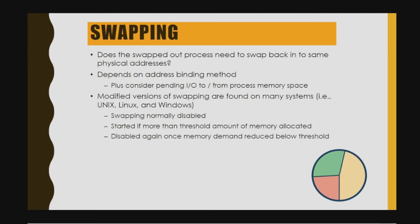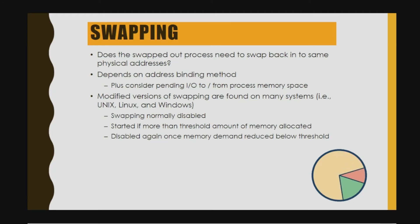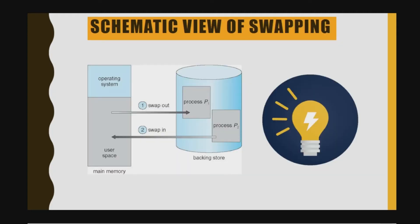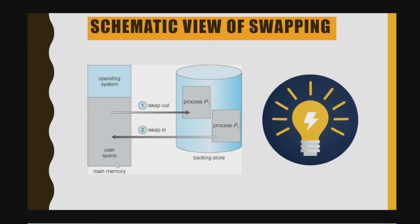In operating systems like Unix, Linux, and Windows, a modified version of swapping is used. In this modified version, swapping is normally disabled and is started only if more than a threshold amount of memory is allocated, then disabled again once memory demand drops below the threshold. The schematic view of swapping shows main memory and the backing store: swap-out moves from main memory to backing store, and swap-in moves from backing store to main memory.